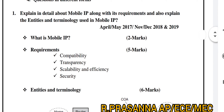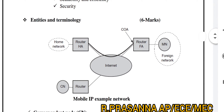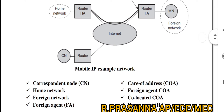And then, what is the most important factor in this question? Entities and Terminologies — just a small diagram. If you look at the diagram, you have to explain: Correspondent Node, Home Network, Foreign Network, Foreign Agent.